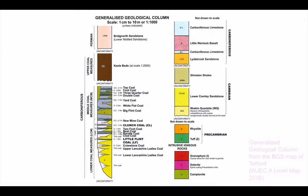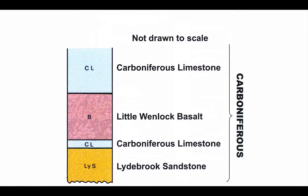Looking at a small part of this map, this shows part of the sequence of rocks that are exposed and represented on the Telford map. The most fundamental information we get is which bed is represented by either the colour or symbol on the map. The Lydbrook Sandstone is represented in a yellowy colour with the symbol LYS. The Little Wenlock Basalt is a red colour marked with the symbol B. Notice how sedimentary rocks and lava flows are shown together in the same column.